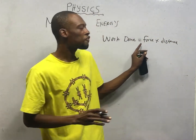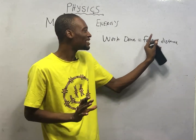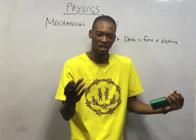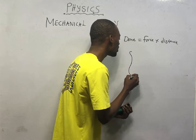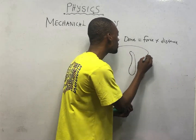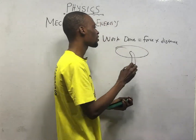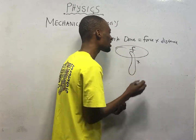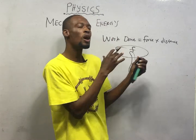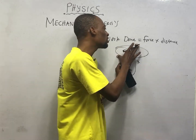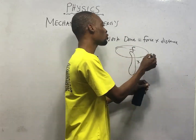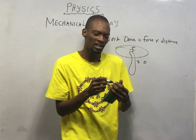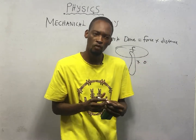Work done equals force times distance. So when a force is being exerted over a distance, we say that work has been done. So if you are carrying a load — a very big load — you can call that the force, and you walk a distance, then work is done. But if you are carrying a big load without walking a distance, and distance is zero, work is not done.